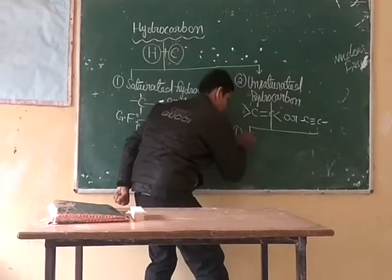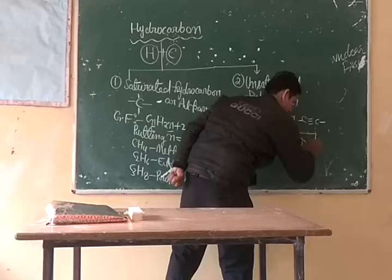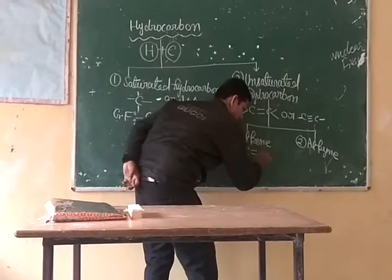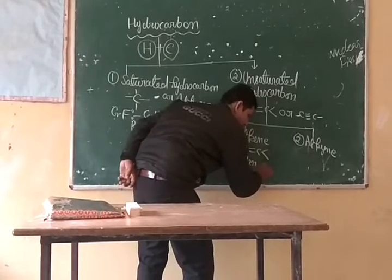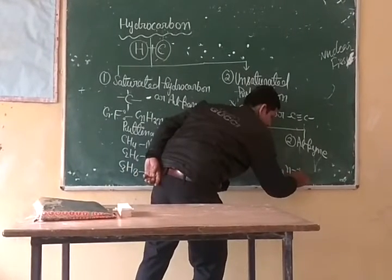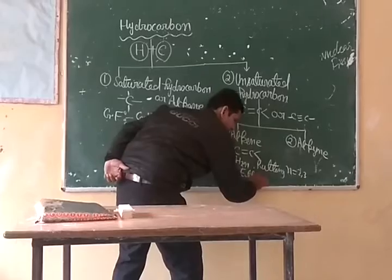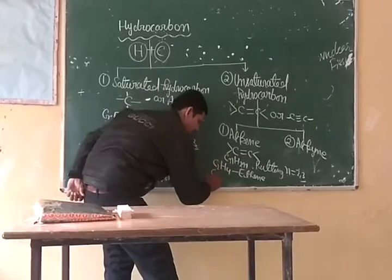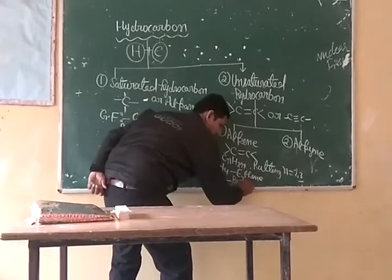Hydrocarbon in which carbon atoms are connected by double bond is called alkene. Its general formula is CₙH₂ₙ. Putting n equal to 2, we get C₂H₄. It is called ethene — two carbons, ends with '-ene'. Putting n equal to 3, we get C₃H₆. This is propene.